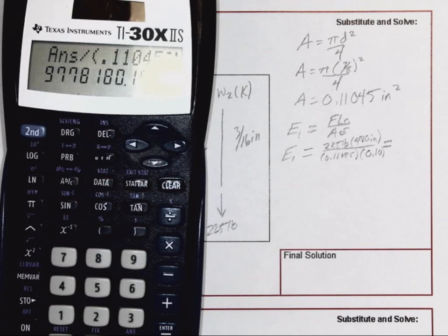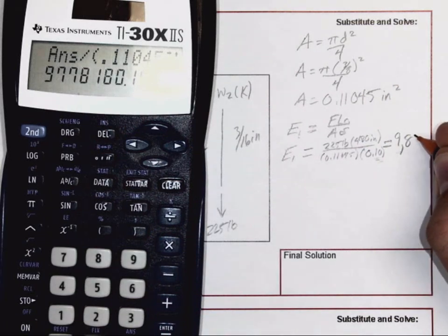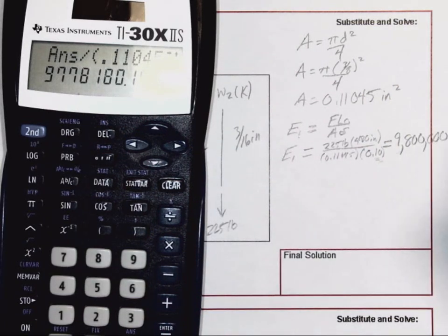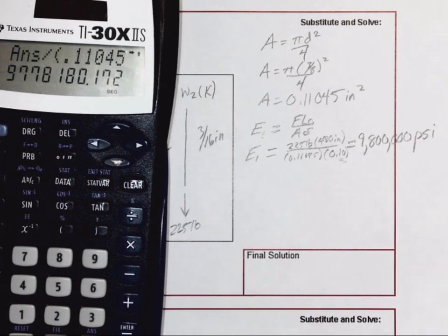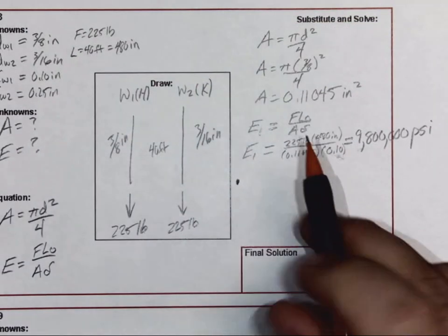So as far as the level of precision we're looking for, your lowest amount of precision based upon your stretch is two significant figures, which is what I'm going to go ahead and round to. So in this case, I'm going to go ahead and say this is going to be 9,800,000 psi. Significant figures: lowest amount that you have is two.